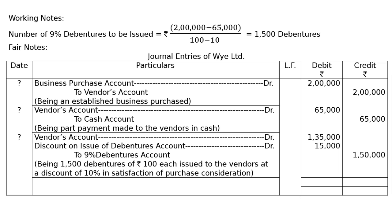After paying 1 lakh 35,000 and 15,000 discount totalling 1 lakh 50,000, we total the debit and credit amount columns. The total is Rs. 4 lakhs 15,000 in both the debit column and the credit column, and this was the final answer.